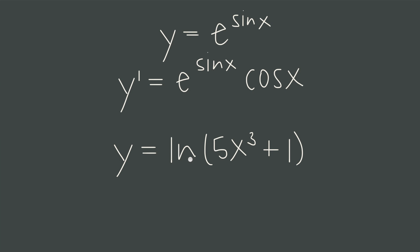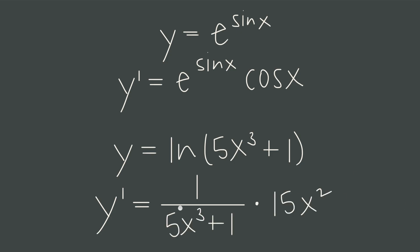If we have a logarithmic function, the derivative of the natural log of anything is 1 over that anything. So our derivative is going to be 1 over — that is the derivative of the outside function — leaving the inside function untouched, and then we multiply by the derivative of the inside function. The derivative of 5x cubed is 15x squared, and the derivative of 1 is 0, so we get 15x squared.